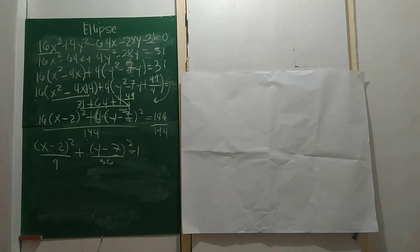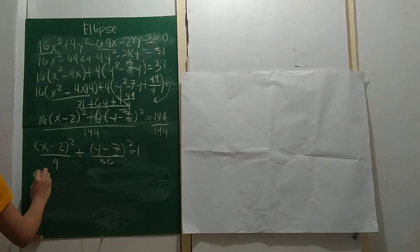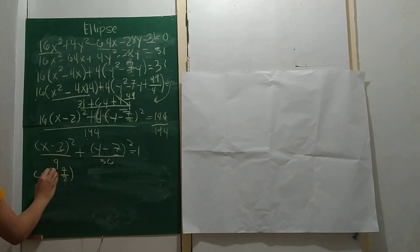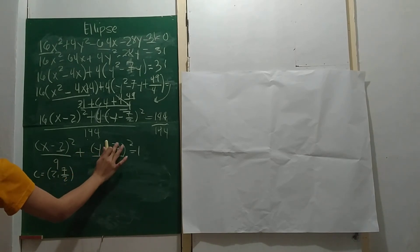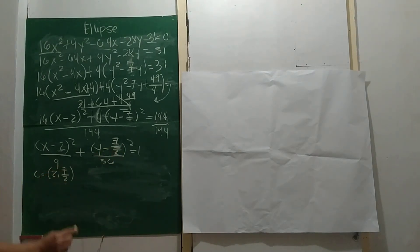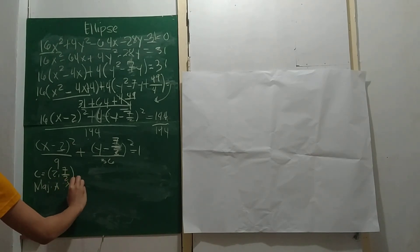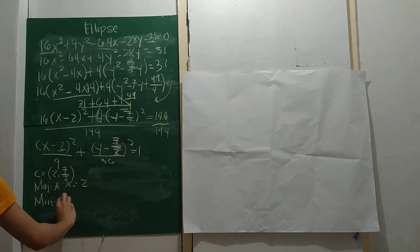Now let's find the center. Our center is 2 comma 7 over 2, with the negative signs becoming positive. Our major axis is x equals 2, and our minor axis is y equals 7 over 2.